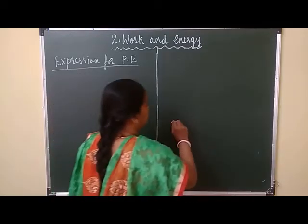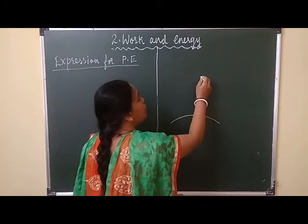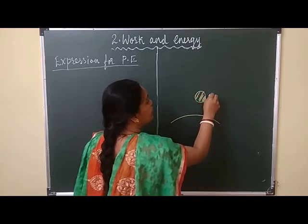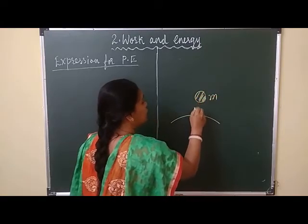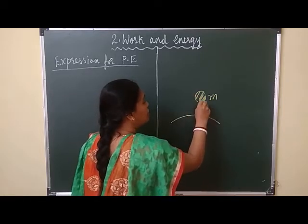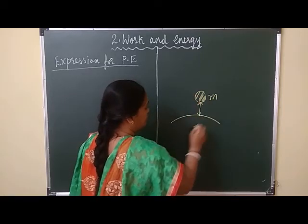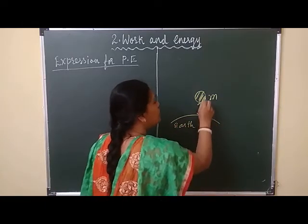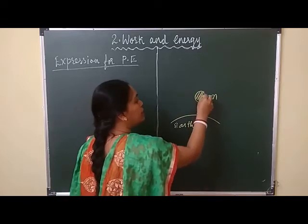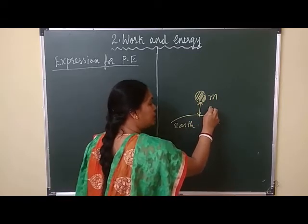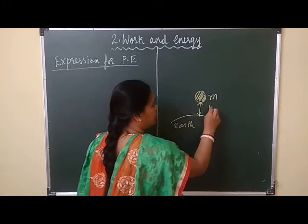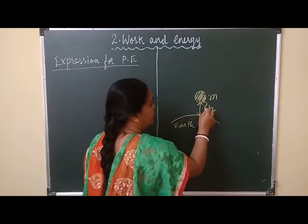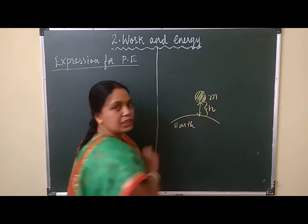Suppose an object of mass M is raised to a height from the surface of the earth. From the surface of the earth, the object is raised to a height or distance — it is making a displacement of height H.